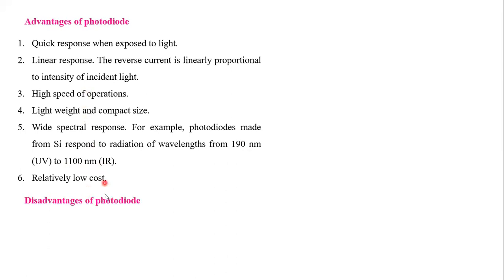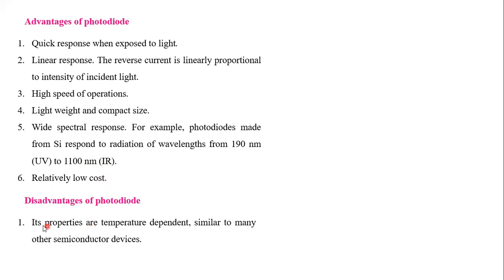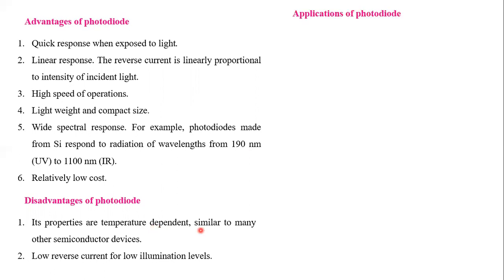Now let's see the disadvantages. The first disadvantage is that its properties are temperature-dependent, similar to other semiconductor devices. You know that all semiconductor device properties are temperature-dependent, and photodiodes are also dependent on temperature. Another disadvantage is a low reverse current at low illumination levels — when light is incident at low intensity, the reverse current is very small.